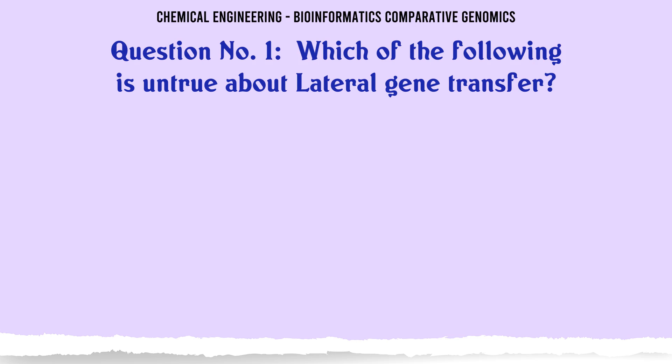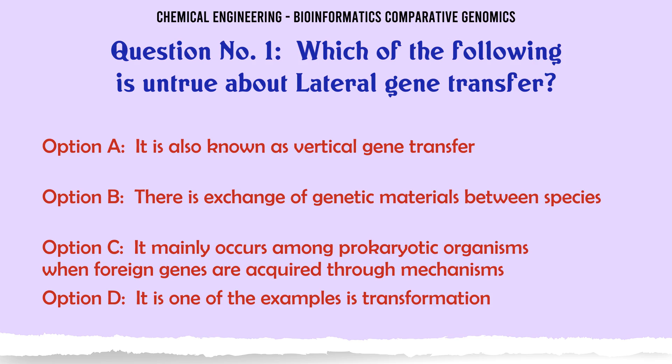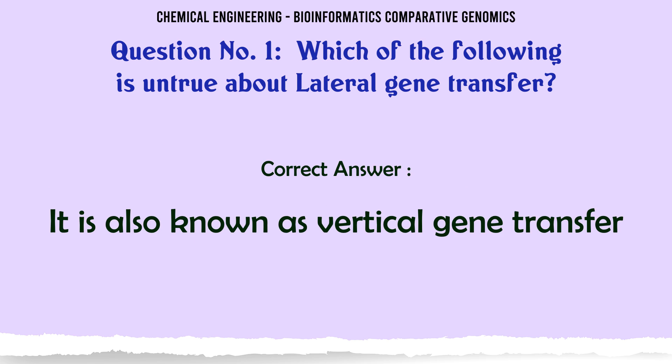Which of the following is untrue about lateral gene transfer? a. It is also known as vertical gene transfer. b. There is exchange of genetic materials between species. c. It mainly occurs among prokaryotic organisms when foreign genes are acquired through mechanisms. d. One example is transformation. The correct answer is: it is also known as vertical gene transfer.